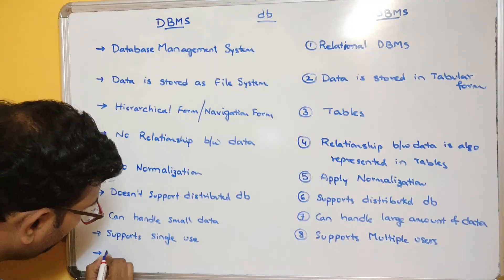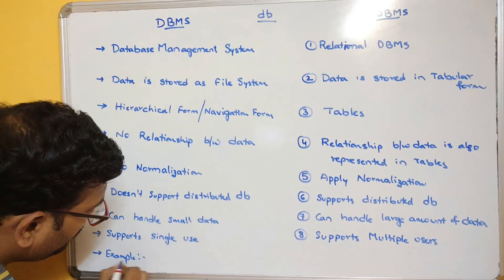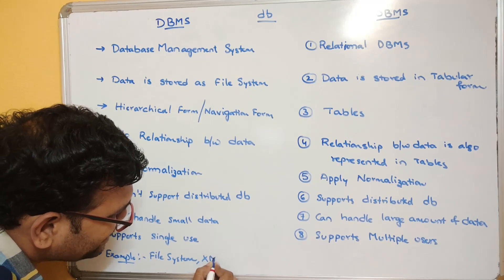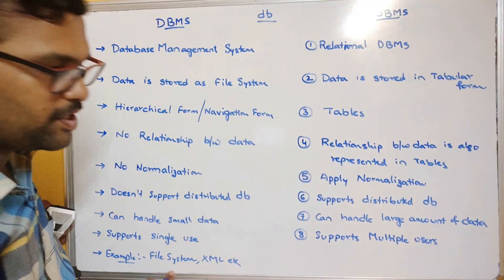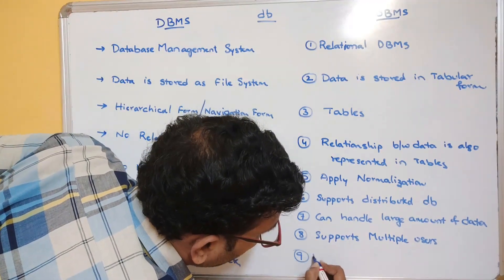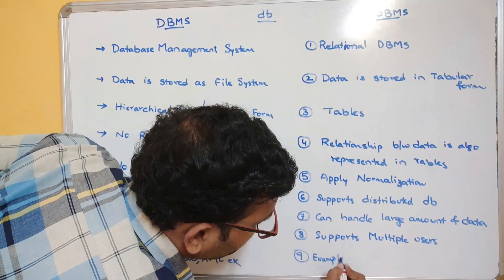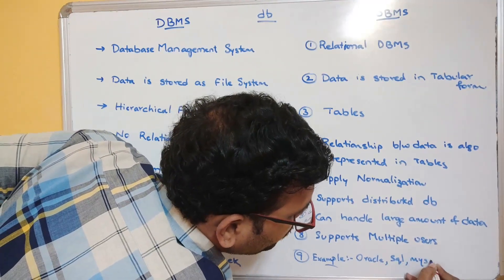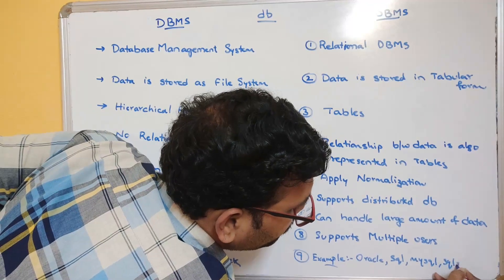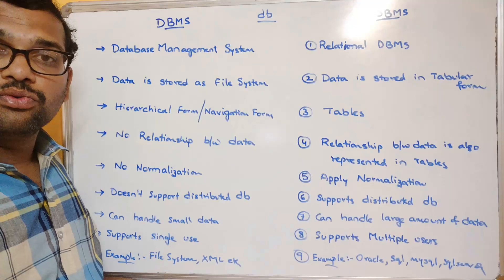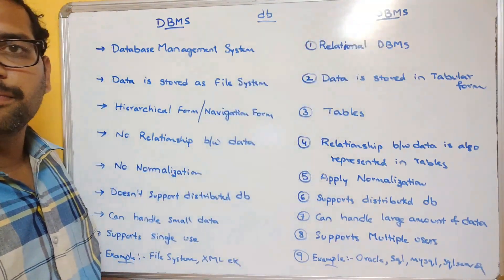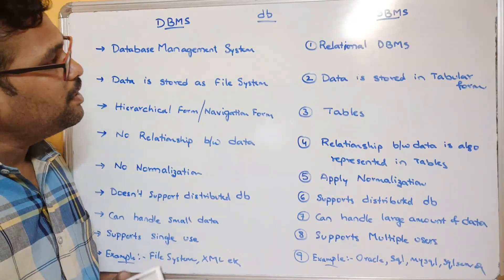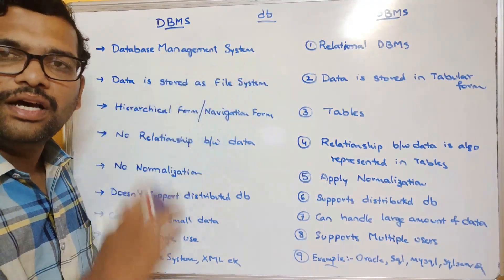Examples of DBMS include normal file systems, XML, etc. Examples of RDBMS include Oracle, SQL, MySQL, SQL Server, etc. Modern database management tools are based on RDBMS — Relational Database Management System. These are the major differences between DBMS and RDBMS.